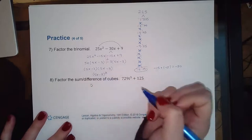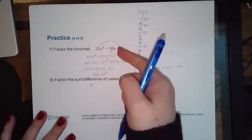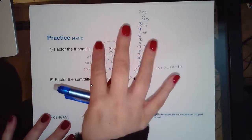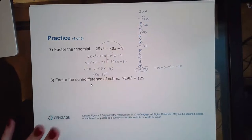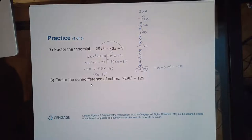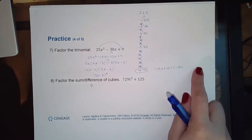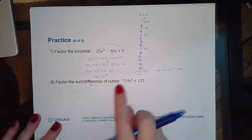Both sides have 5x minus three in common. Taking it out leaves 5x on the left and minus three on the right, so the result is (5x minus 3) squared. The special product formula would have you recognize the perfect squares and double their product to get 30 — that works too, but this general grouping method works for all trinomials, while that formula only works for a special kind.